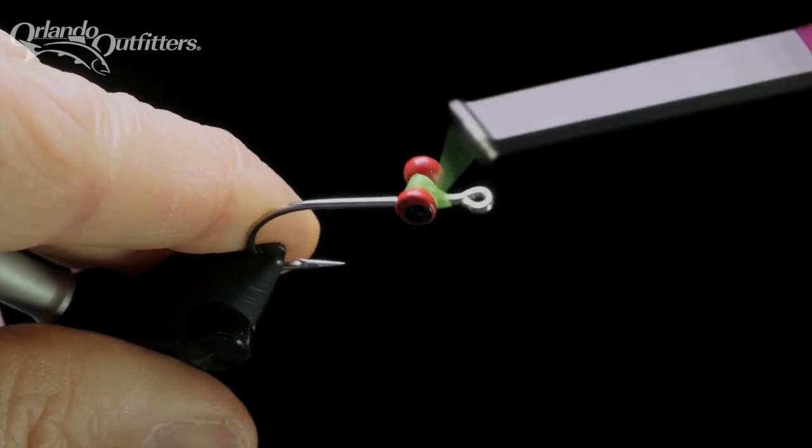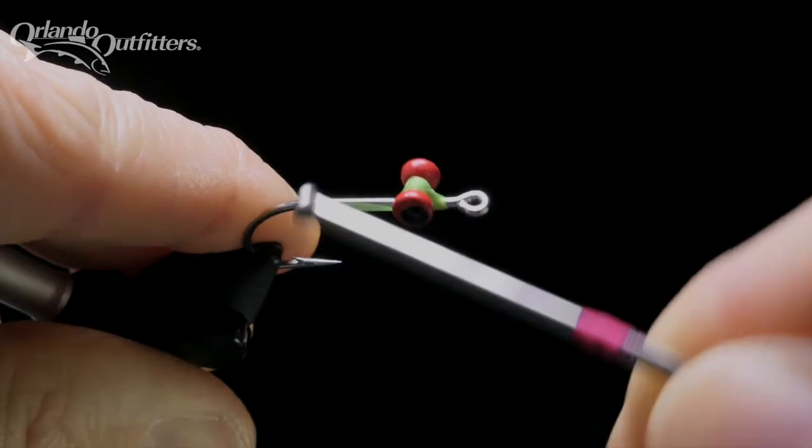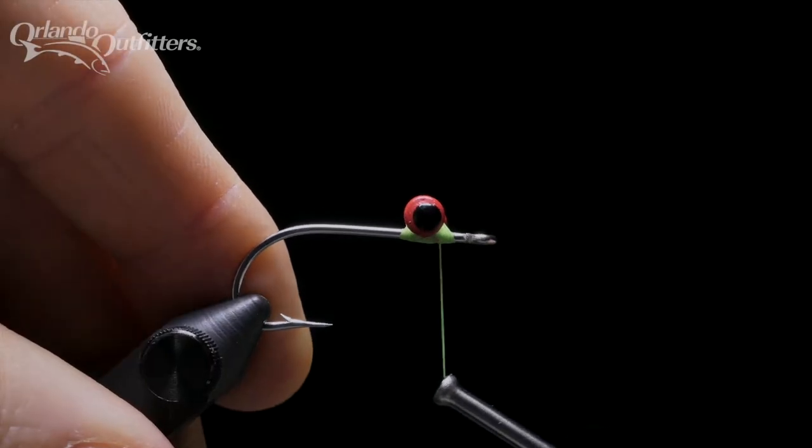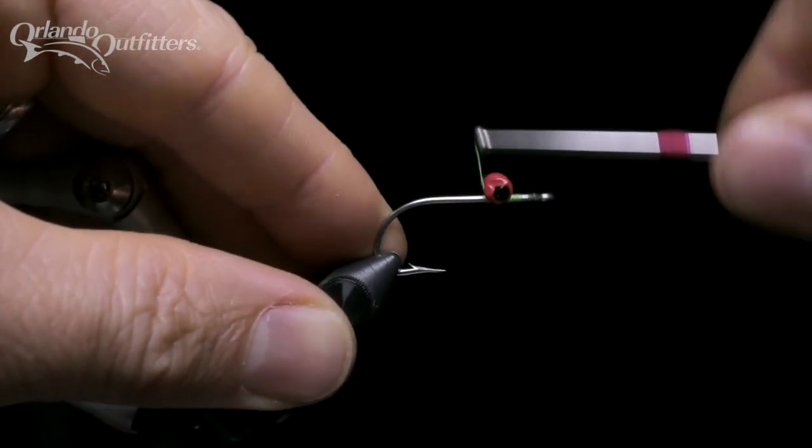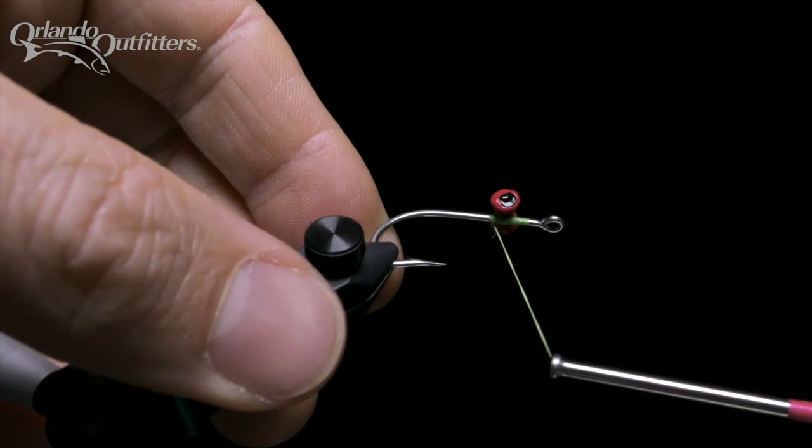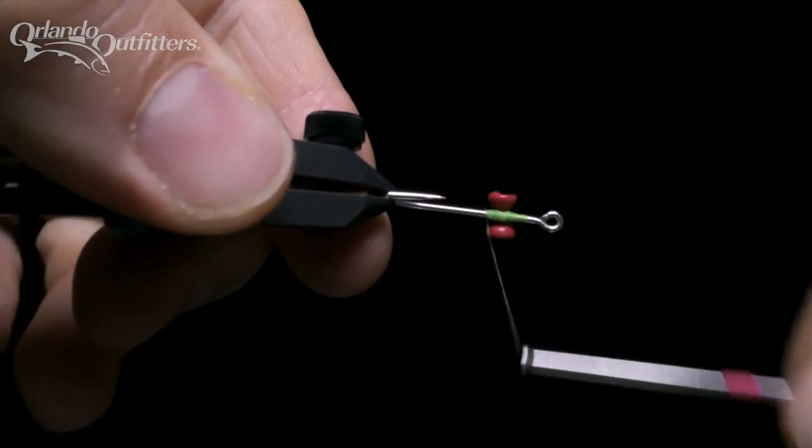I usually do wraps in pairs, with two this way and two in the other direction. The second type of wrap is a standard locking wrap, which goes straight around the hook shank, wrapping over itself two or three times.